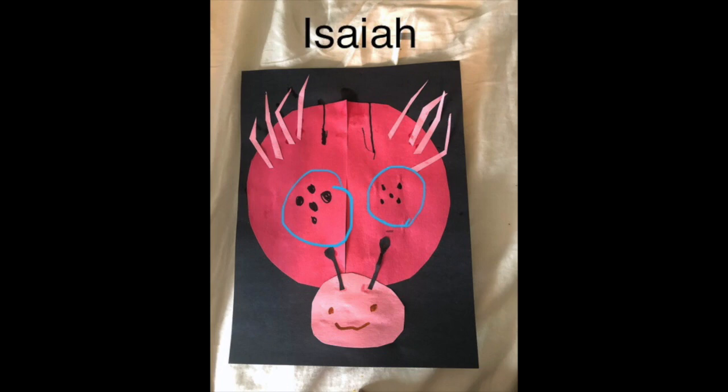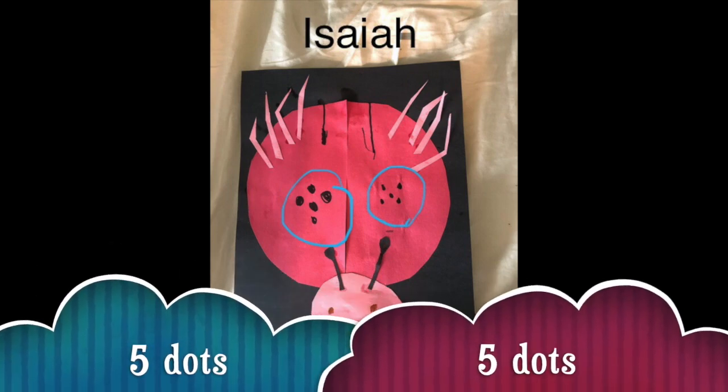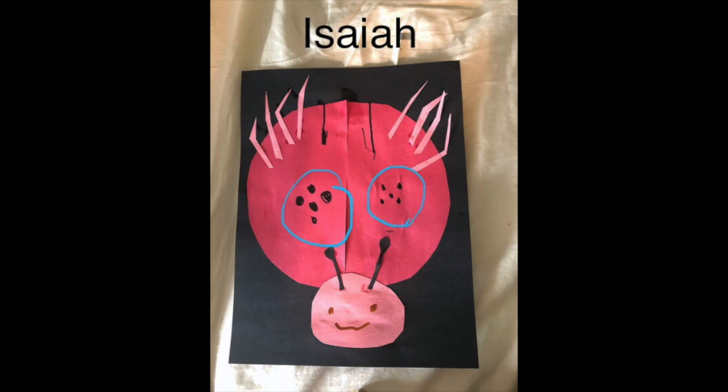One, two, three, four, five. One, two, three, four, five. Even though the shape of dots on the left are different than the shape of the dots on the right, they still are five. They each have five, and we know that five plus five makes ten.